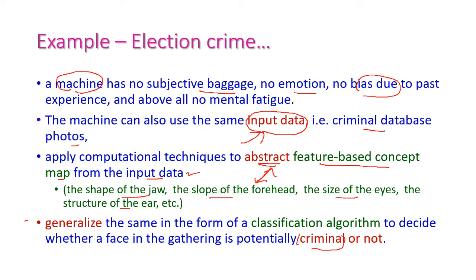And after that, the third one is generalization. Then finally, the machine learning algorithm will generalize by using the classification algorithm and decide whether the face with the gathered feature is criminal or not. So likewise, the first one is input data, second one is abstraction, and third one is generalization.